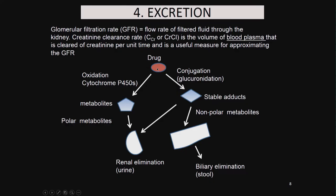Drugs undergo oxidation or conjugation, so you may find metabolites and stable adducts. If the metabolite is polar, it immediately goes through renal excretion in urine. If it is non-polar, these stable adducts may go into biliary elimination via stools. So oxidation and conjugation produce polar metabolites that are removed in urine, while non-polar products are removed in stools.